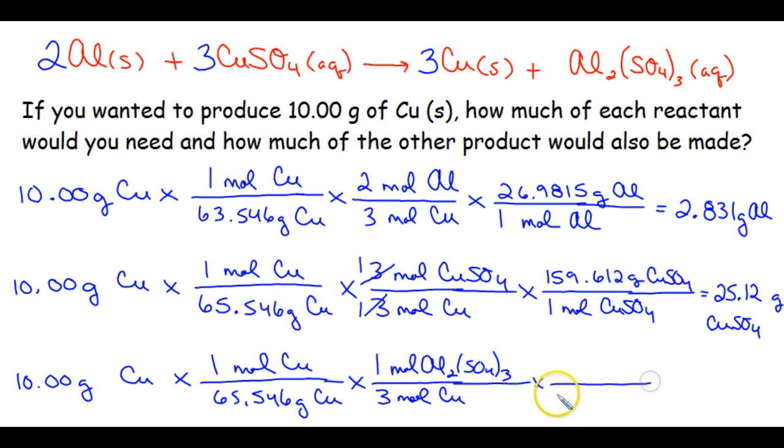And then we're going to convert the moles to grams. And the molar mass of aluminum sulfate is 342.161 grams. And I'm just going to abbreviate AS because I'm running out of space. And rounding that to 4 sig figs, you got 17.95 grams of AL2(SO4)3.